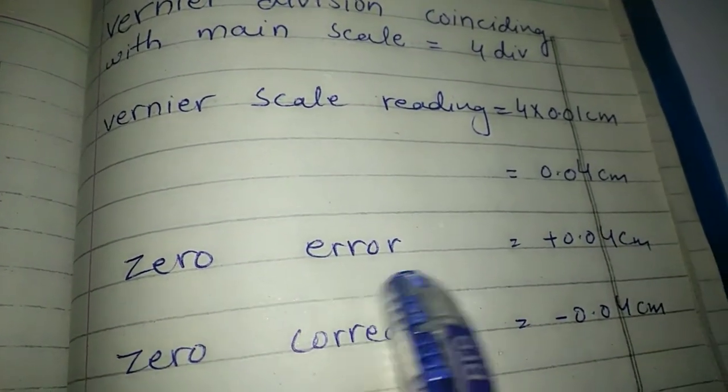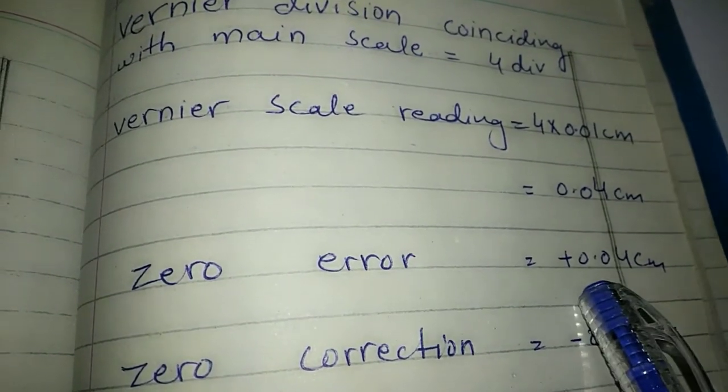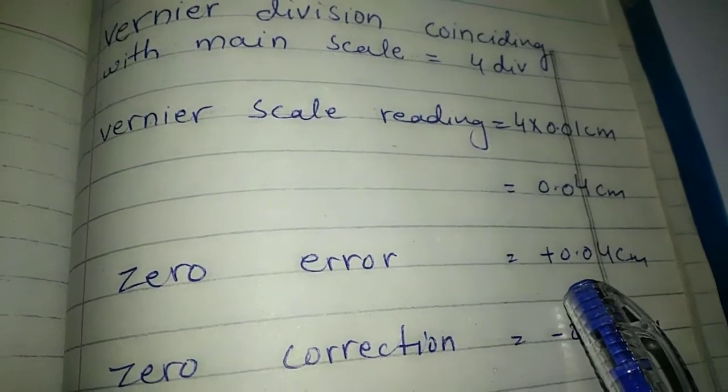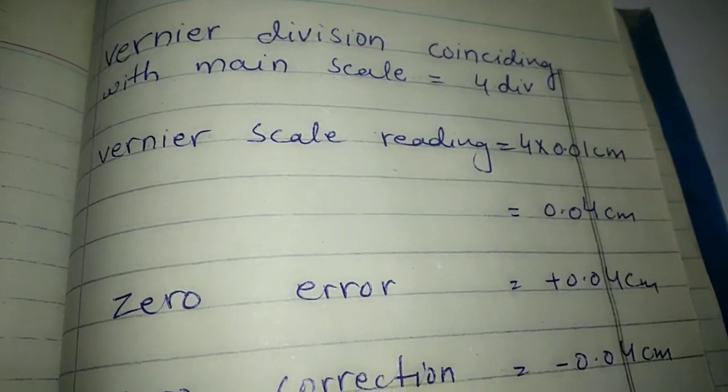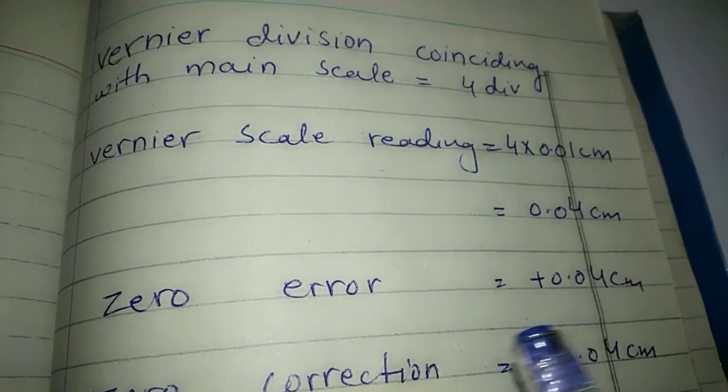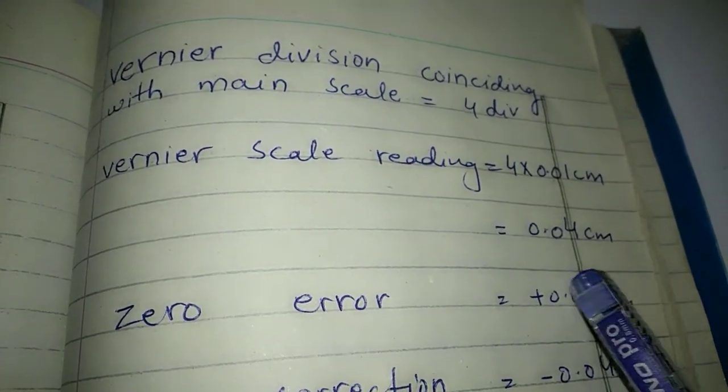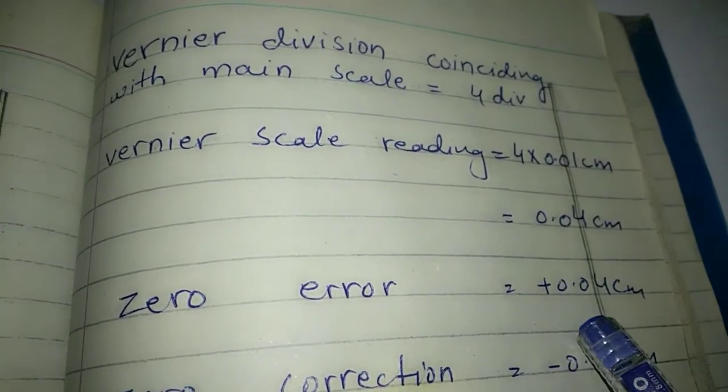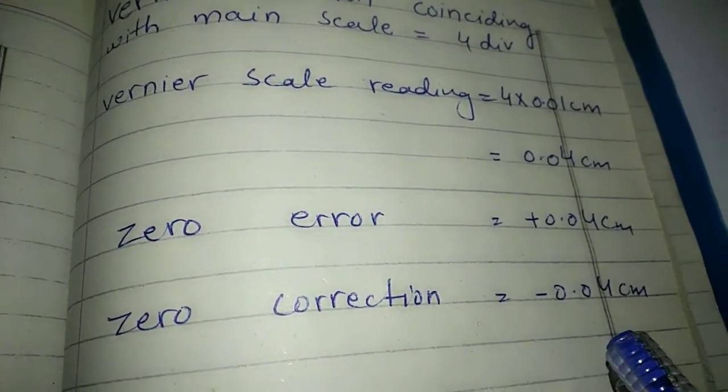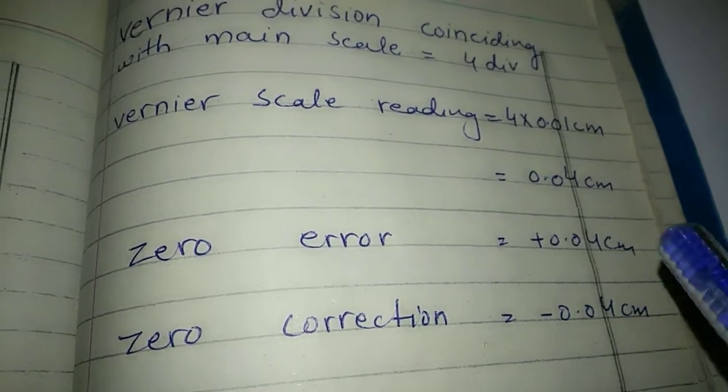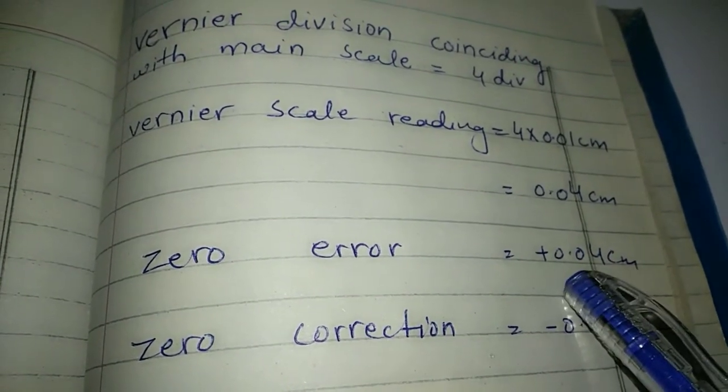Zero error: positive 0.04. This is plus main scale reading, which equals 0.04 cm.